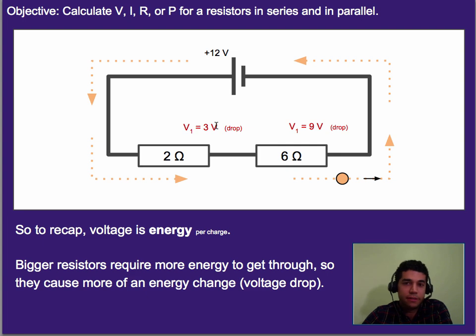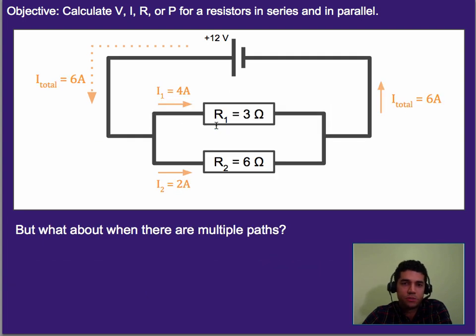Alright, so we talked about single paths. What if there's multiple paths? What happens? Well, we know that the current splits, meaning current coming out of here, there's 6 amps, 4 amps goes through the top, and 2 amps goes through the bottom. And then they combine back together for 6 amps. But we're going to look at what happens to energy in this case.